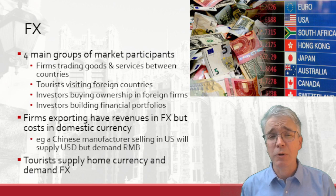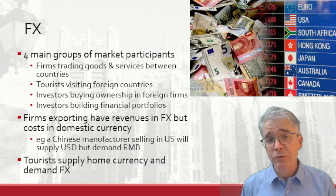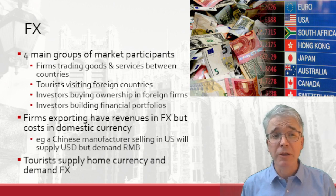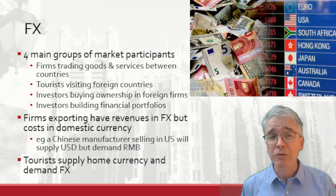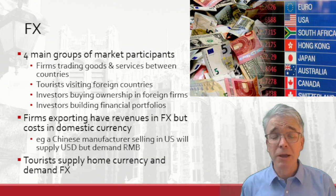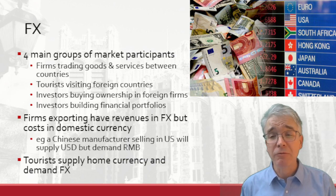Who is participating in these foreign exchange markets? The big groups are: firms trading goods and services between countries, tourists visiting foreign countries, investors buying ownership in foreign firms, and investors buying financial portfolios. A US firm exporting machinery to a foreign country will have revenues in foreign currency but costs in domestic currency. A Chinese firm selling in the US will have revenues in dollars but costs in renminbi. Both want to supply one currency and demand another. Tourists similarly supply their home currency and demand foreign exchange.